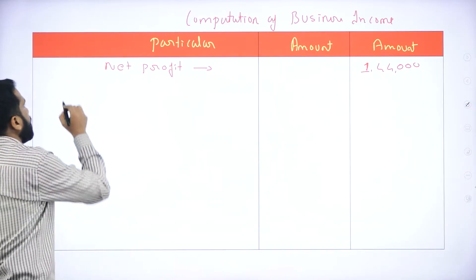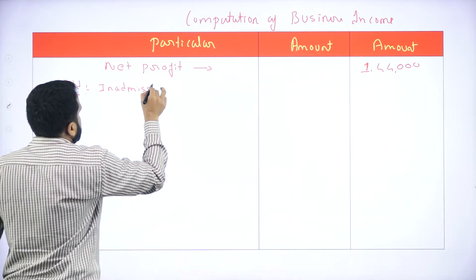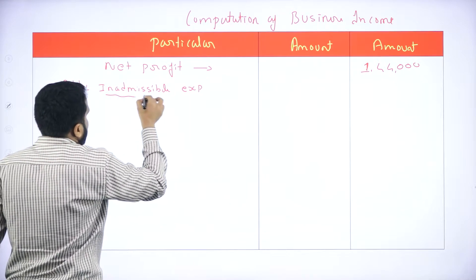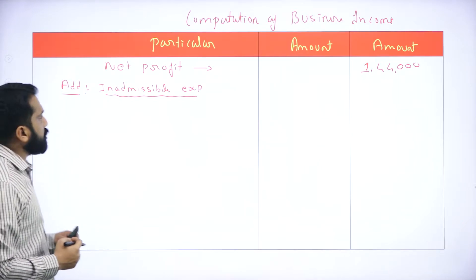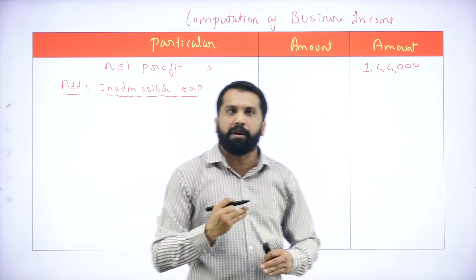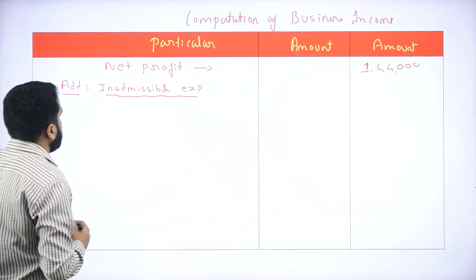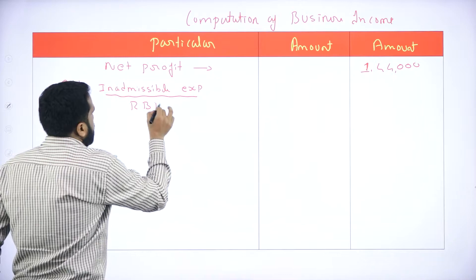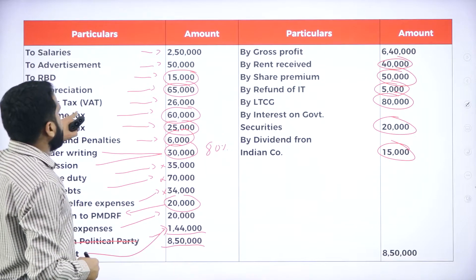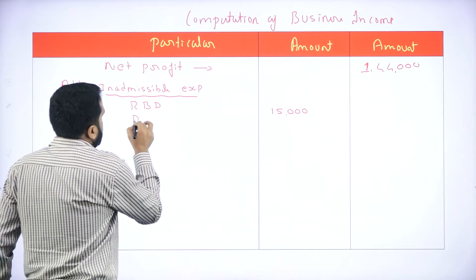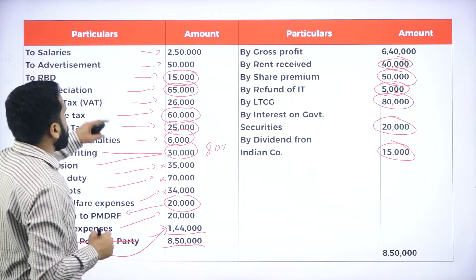Add inadmissible expenses — which are those we already marked, we copy them one by one. Salary is over, advertisement no. R.B.D. — 15,000. Your R.B.D. is 15,000. The next one is depreciation — 65,000.